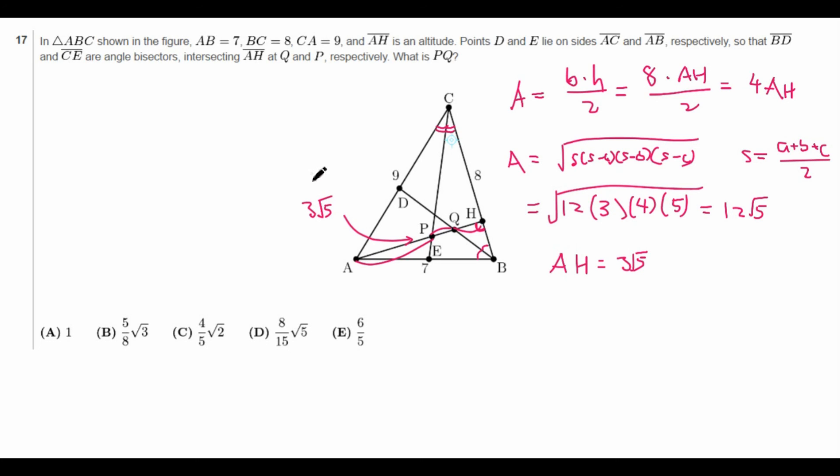What remains to do is to find the ratios AP, PQ, and QH, the ratios they have with each other. In order to do this, we note that since BD and CE are angle bisectors, they follow the angle bisector theorem, which states that, for example, if we consider the triangle ACH, we have the ratio AC over CH is equal to AP over PH. And this is true because P is the foot of the angle bisector from C to AH. And so this is the angle bisector theorem.